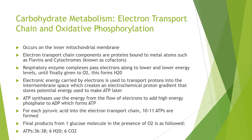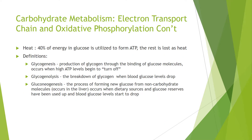For each pyruvic acid in the electron transport chain, 10-11 ATPs are formed. The final product from one glucose molecule in the presence of O2 is 36-38 ATPs, 6 H2O, and 6 CO2s. 40% of energy in glucose is utilized to form ATP; the rest is lost as heat.